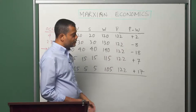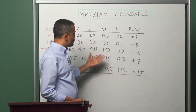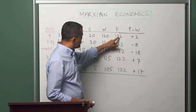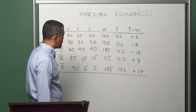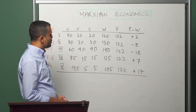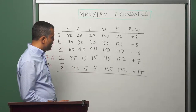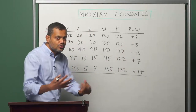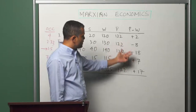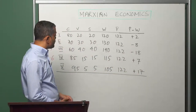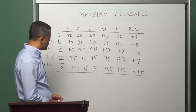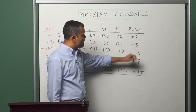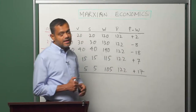This column gives us the price of production — the price which ensures that every sector earns the same average rate of profit, in this case 22 percent. In the process through which the price of production emerges, there is a redistribution of surplus value. Sectors with negative entries lose surplus value; sectors with positive entries gain surplus value. Sector 5, a high organic composition sector, gains 17 units, whereas sector 3, the lowest organic composition sector, loses 18 units.